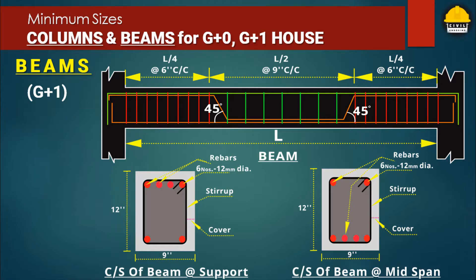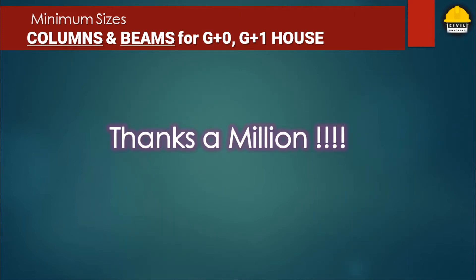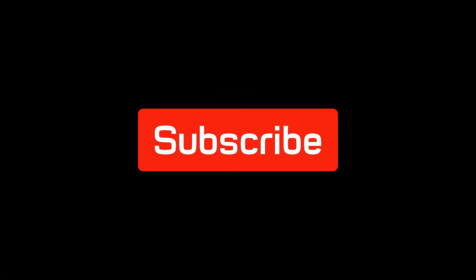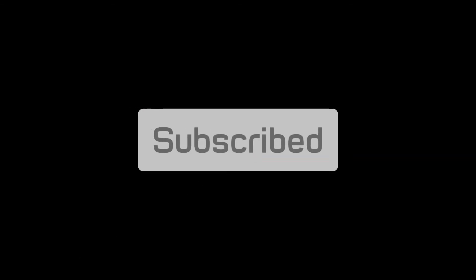So this is how we can simply place beams, columns, and stirrups for a single storey or double storey residential house in a way that is both economical and safe. I hope you got a clear concept today. If you have any questions or suggestions, drop them in the comment box and I will definitely try to address all your queries. Thank you so much for watching. If this video helped you, please hit the like button, share it with your close ones, and subscribe for civil engineering content.